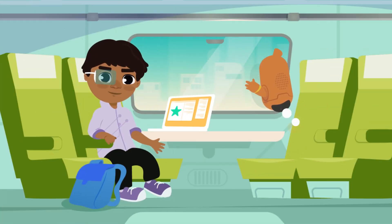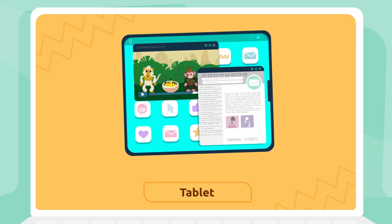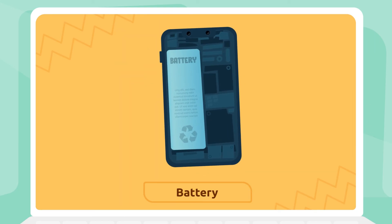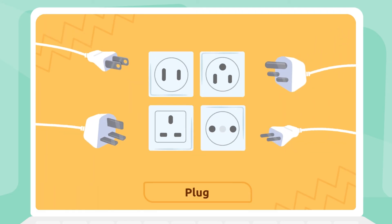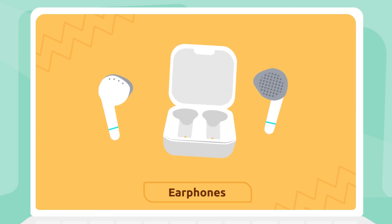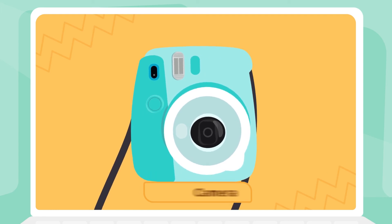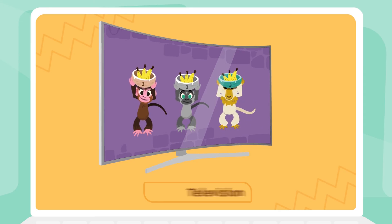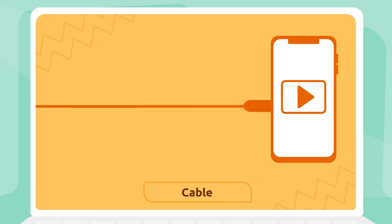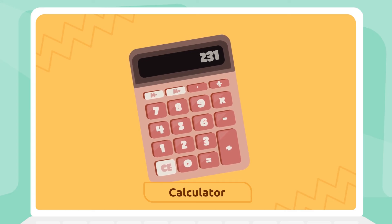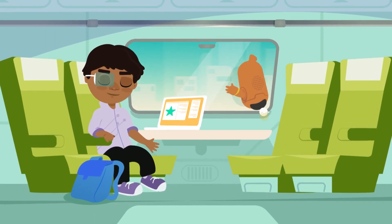So many words! Let's recap them: mobile phone, tablet, battery, charger, plug, earphones, camera, television, game console, cable, calculator.